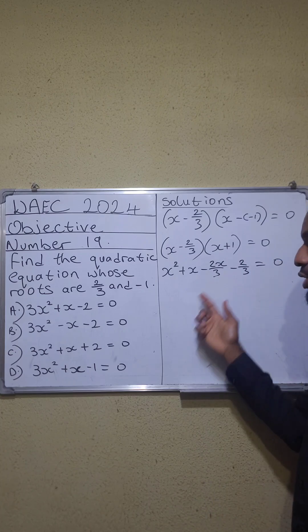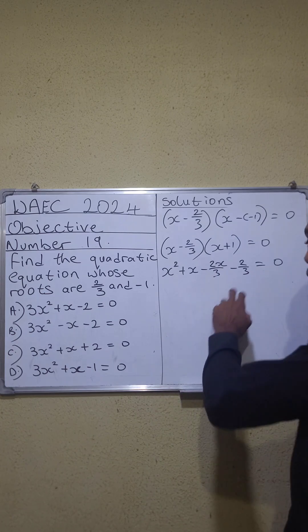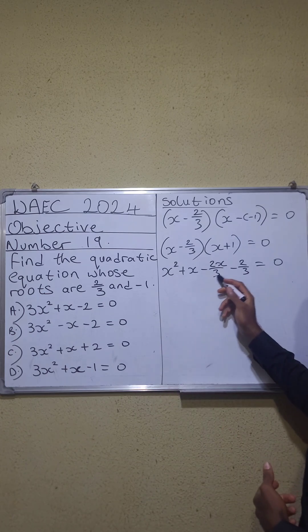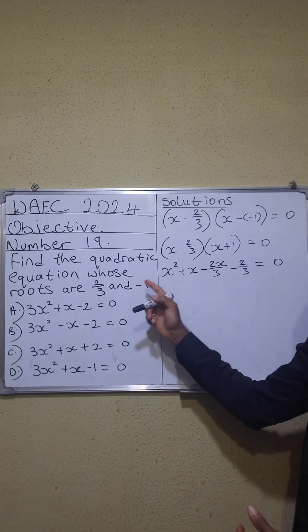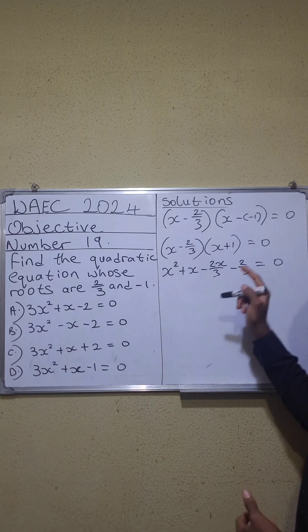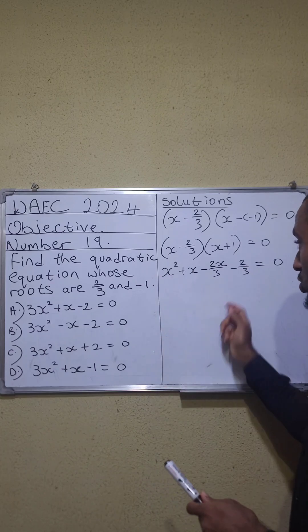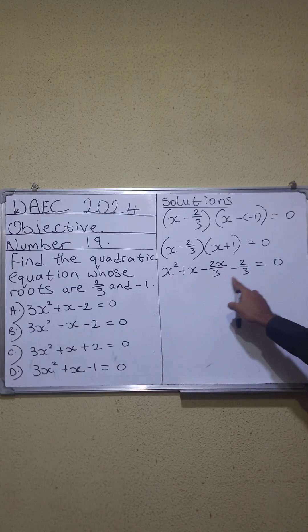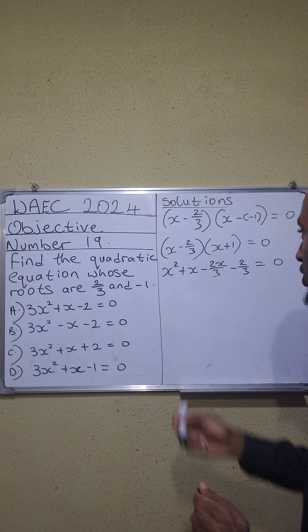When you have a fraction here, we have to eliminate these denominators. How? We find the LCM of these denominators and multiply each expression by the LCM. The LCM of 3 and 3 is 3.